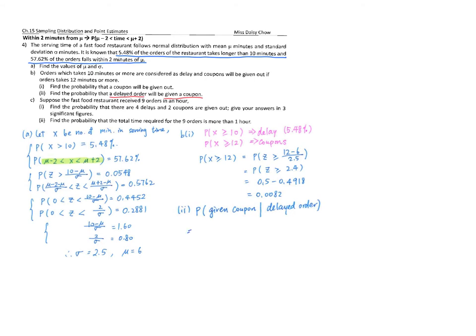We can write this formula: delayed order means X ≥ 10, and I also want X ≥ 12. This is asking for P(X ≥ 12 AND X ≥ 10), which equals P(X ≥ 12) divided by P(X ≥ 10). I have both numbers so I can easily calculate the answer.